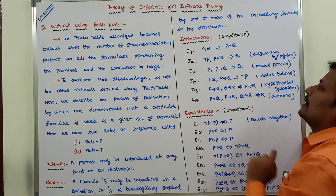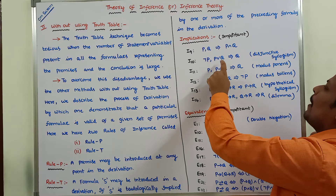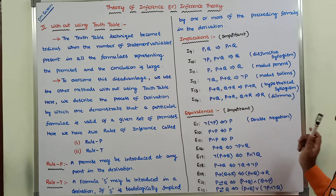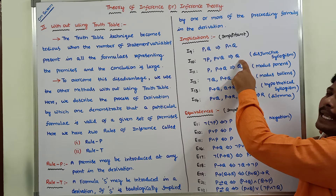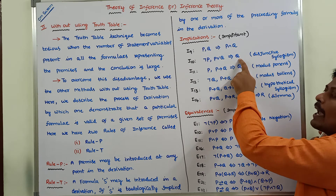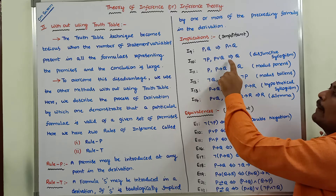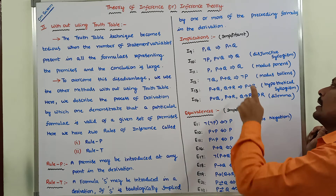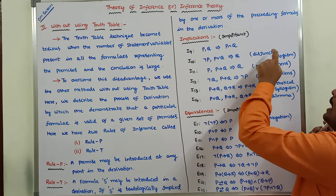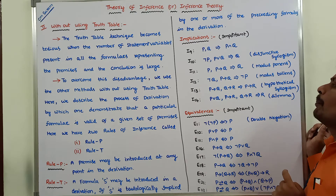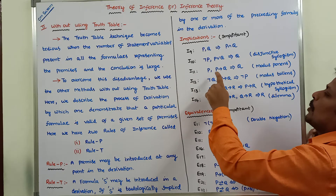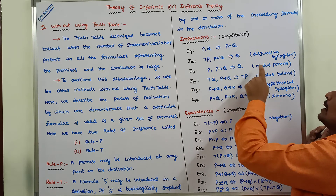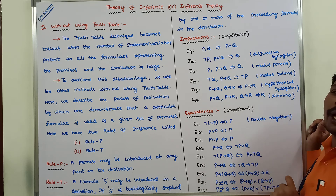I10: negation P and P conditional Q — from these two formulas we get a new formula Q. This is called Disjunctive Syllogism. I11: P and P conditional Q implies Q. This is called Modus Ponens.